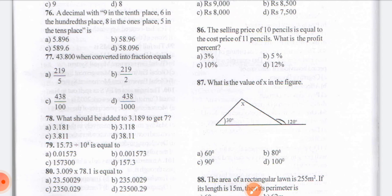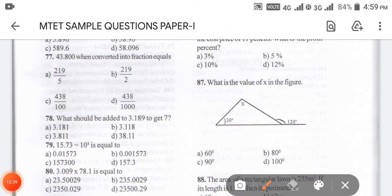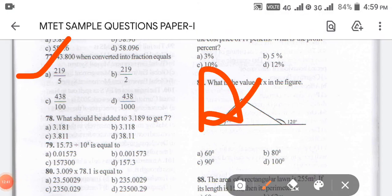The answer for 77 — one way of doing it is you divide and see. When we divide 219 by 5, we are getting 43.8. The answer is option B — 43.800.